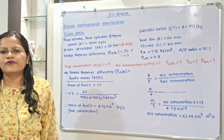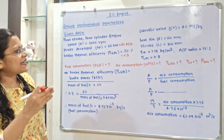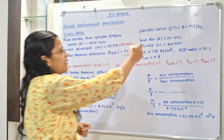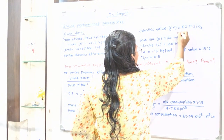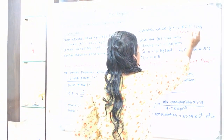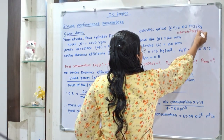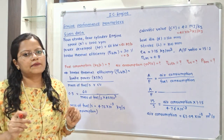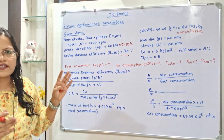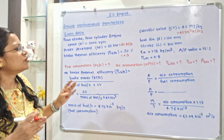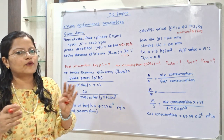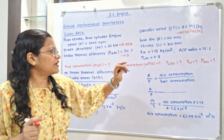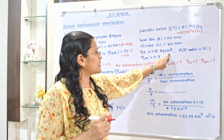Calorific value of fuel is given as 42 MJ per kg, but the standard unit is kJ per kg, so we write it as 42 × 10³ kJ per kg. Bore diameter D = 120 mm, which in standard units is 0.12 m. Stroke L = 100 mm, that is 0.1 m. Density of air is 1.15 kg per m³.